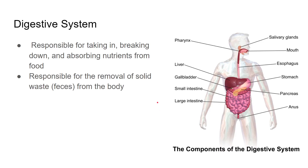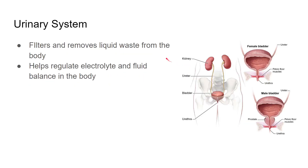And then your digestive system — this one's pretty straightforward. Your digestive system is responsible for taking in, breaking down, and absorbing nutrients from food. And then it's also responsible for removing solid waste, otherwise known as feces or poop, from the body. Your urinary system, same way — it filters and removes liquid waste from the body and it helps regulate electrolyte and fluid balance in the body.